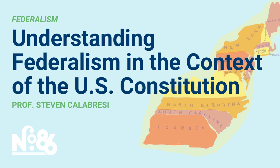With that discussion of Article 4, Sections 1 and 2, and prior comments on congressional power under Article 4, Sections 3 and 4, we've completed Article 4 of the Constitution, which is really all about federalism. The first three articles are about the separation of powers for the most part, except for Article 1, Section 8, which enumerates the powers of the national government. The states even have the power to pass or stop a proposed constitutional amendment.